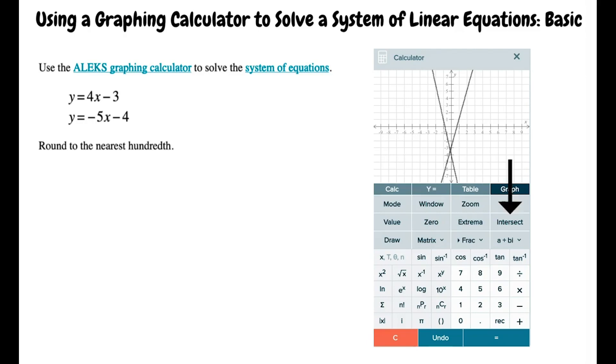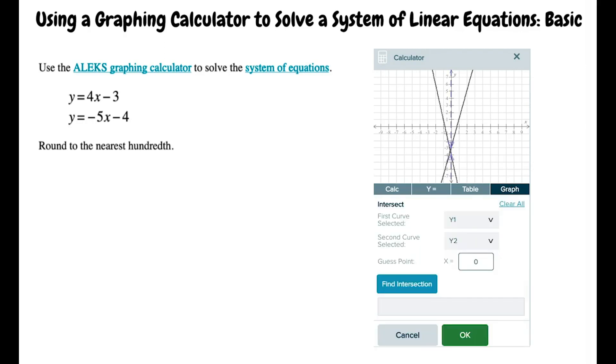The next step is to click intercept, which brings you to a screen that looks like this. Ensure that the first curve selected is y1 and the second curve selected is y2. Then make a close estimate of the x value at the point of intersection. Lastly, click on find intersection to let the calculator know you are ready to see the x value and the y value at the point of the intersection.